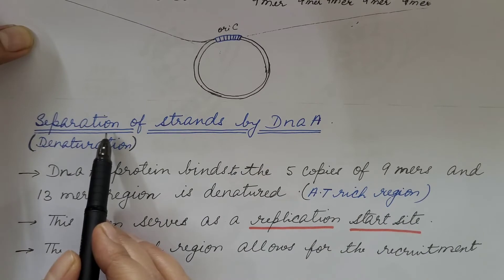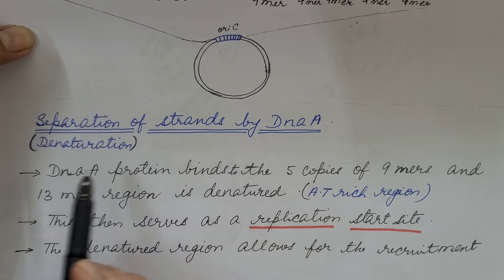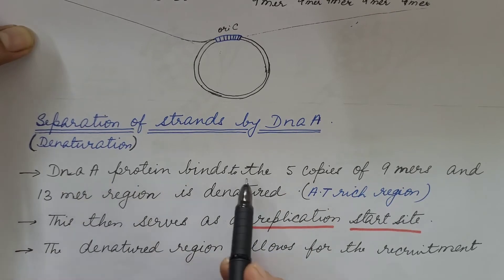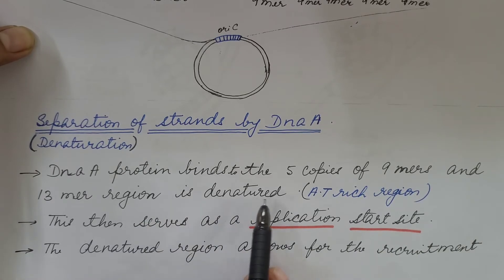Now the separation or denaturation or melting of strands by DNA-A. DNA-A protein binds to the 5 copies of 9-mers and 13-mer region is denatured.